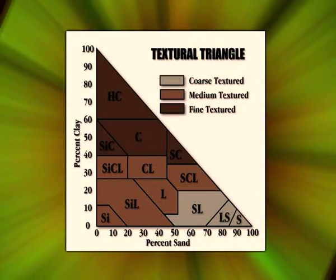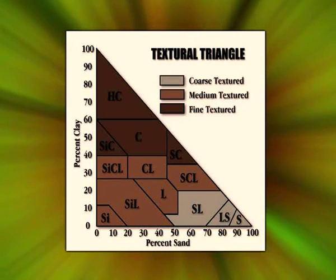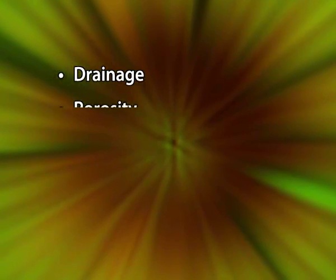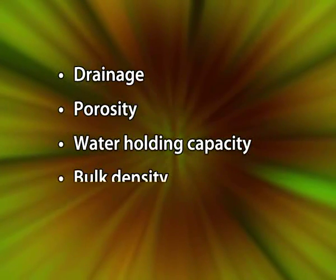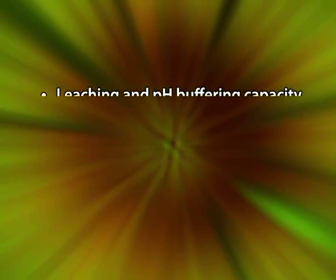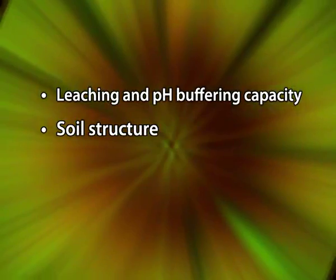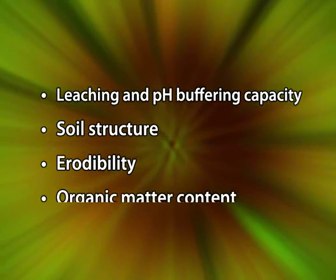Soil texture is not influenced or changed by crop or soil management practices because it does not alter the proportion of soil separates in a soil. Soil texture is the primary soil property which influences other physical and chemical properties of soil. The proportion of clay and sand particles in a soil determines many soil properties. These include drainage, porosity, water holding capacity, bulk density, cation exchange capacity, leaching and pH buffering capacity, soil structure, erodibility and organic matter content.